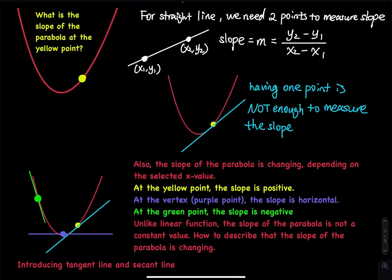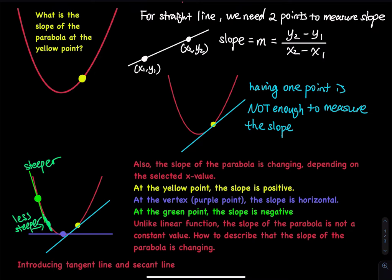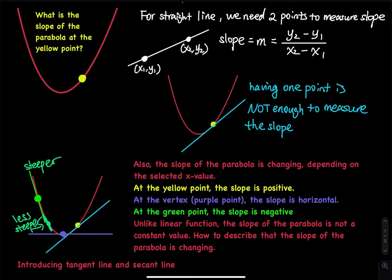If I draw another point right here and draw a line, do we agree that this line is steeper compared to this line? This line is less steep. The steeper line has a bigger negative slope, and the less steep line has a smaller negative slope. So at the yellow point, the slope is positive — look at the line touching the yellow point, it is going uphill, so the slope is positive. At the vertex, we have a horizontal line so the slope is zero. At the green point, we have a negative slope. So unlike a linear function, the slope of the parabola is not a constant value.